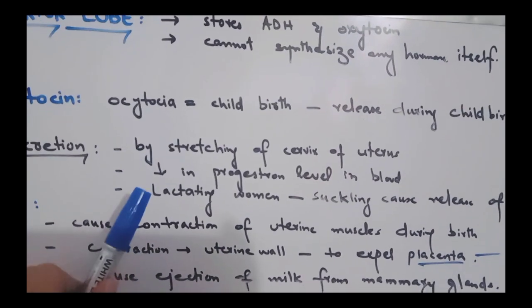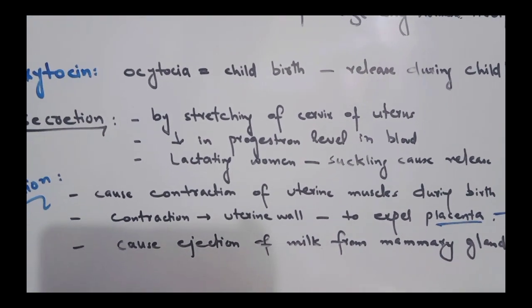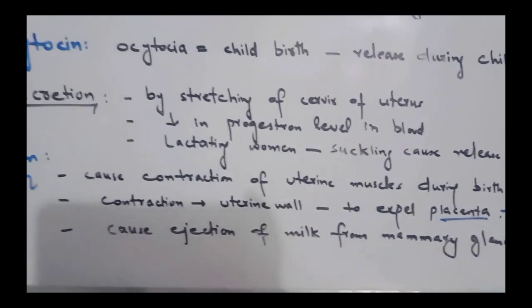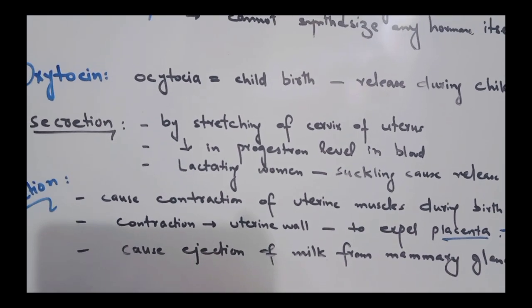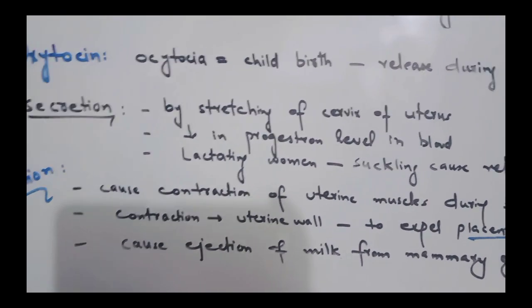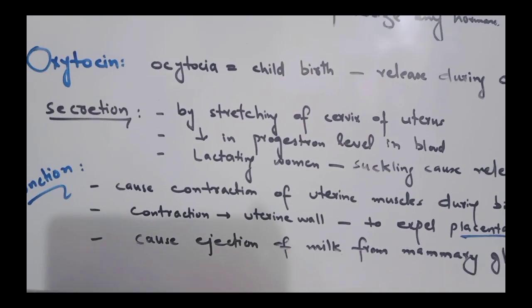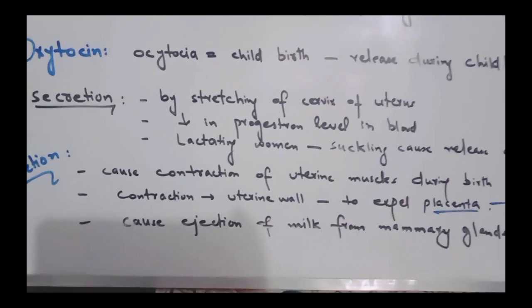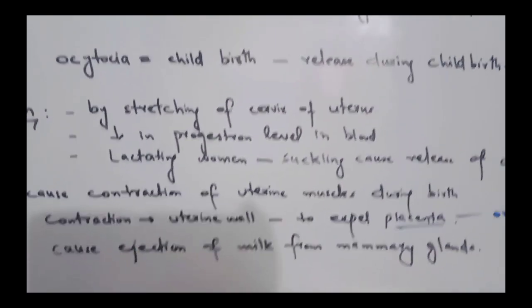Oxytocin release is triggered by stretching of the cervix of the uterus. When there is a low level of progesterone in the blood — a steroid hormone that regulates the menstrual cycle and prepares the uterus — oxytocin secretion is also stimulated. Additionally, in lactating women, nursing causes the release of oxytocin.